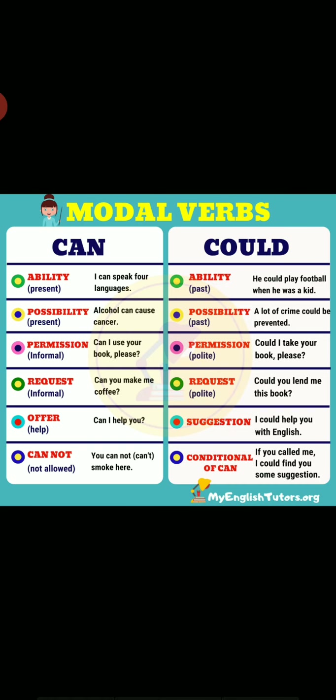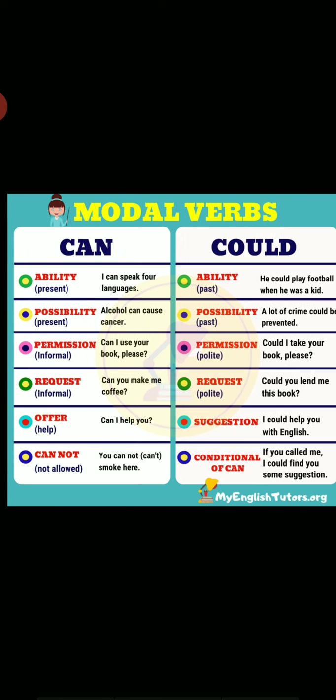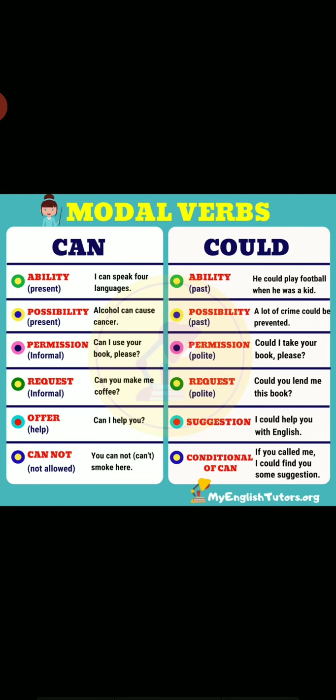Some examples are: 'Extreme rain could cause the river to flood the city' — this is showing possibility. Second, 'Nancy could ski like a pro by the age of 11' — this is past ability of Nancy. Third, 'You could see a movie or go out to dinner' — this is a suggestion. Next, 'Could I use your computer to email my boss?' — this is a request.